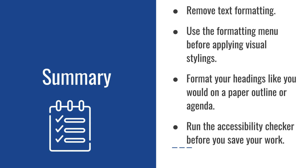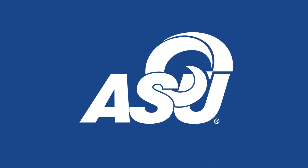I just wanted to summarize a few of our main points before we end this video. First, remove text formatting as soon as you're copying and pasting information over. You'll also want to use the formatting menu before you apply any of those visual stylings — and that goes for all of your headings. Then format your headings like you would on a paper outline or agenda. And finally, please take a moment to run the accessibility checker before you save your work. That concludes our video today — thank you so much for your time.